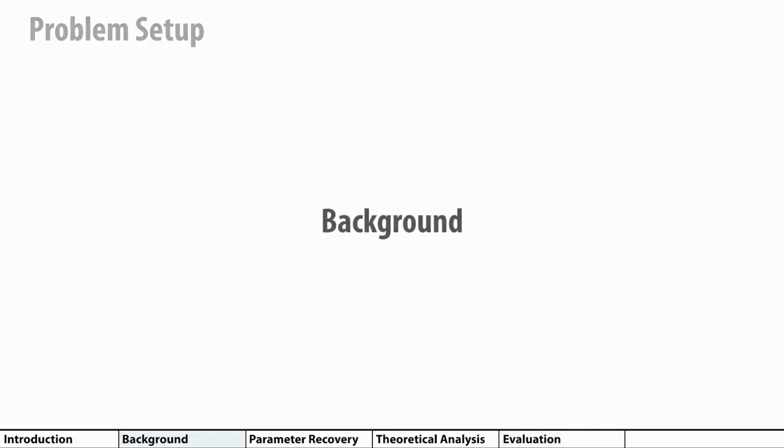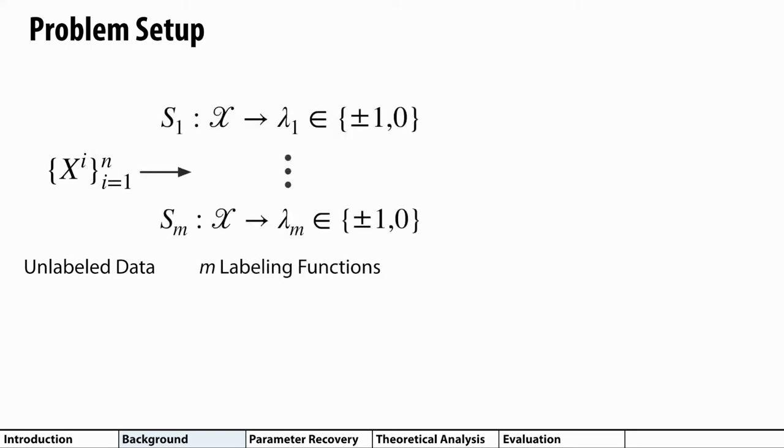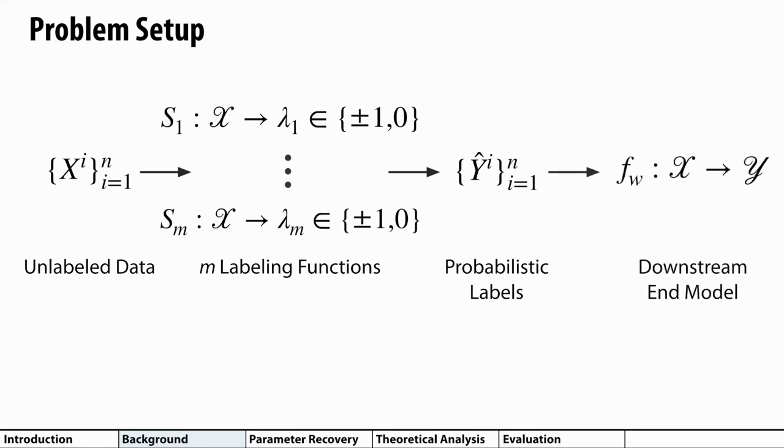Let's begin with some background. I'll first describe the formal problem setup. We'll present binary classification tasks for simplicity, but we can handle the multi-class case as well. Check out our paper for more details. We'll start with a collection of unlabeled data and m labeling functions, each of which can assign a label to data points or abstain, here represented by the zero vote. We want to use the votes from these labeling functions to generate probabilistic training labels y-hat, which can then be used to train a downstream end model.